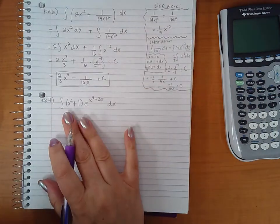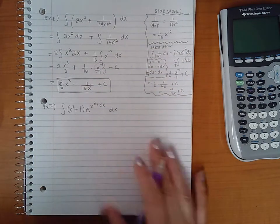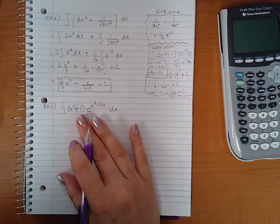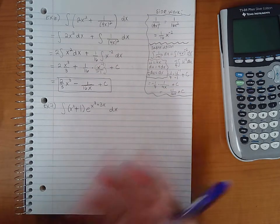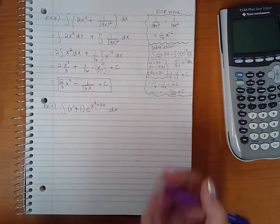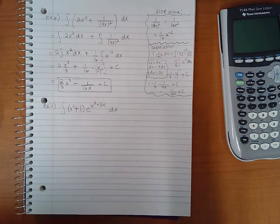So now we have example seven, the last example of this section. So here again you run into the part where what is the inner function and the outer function, right? What am I going to let u equal?